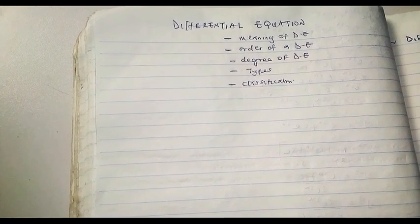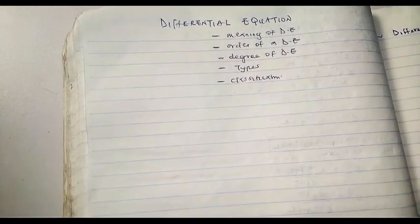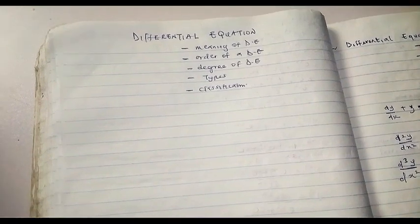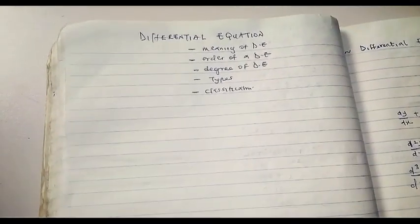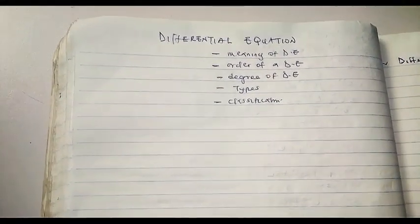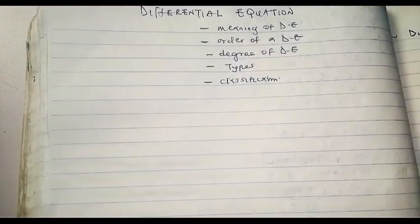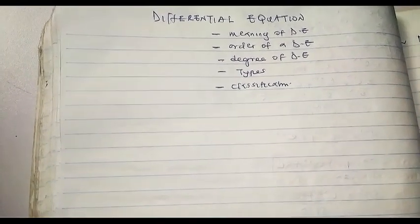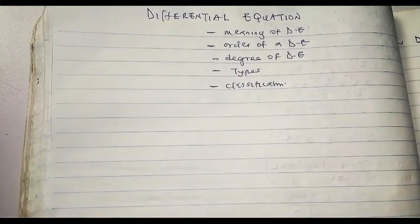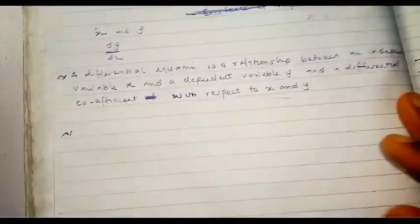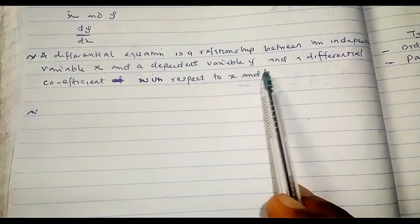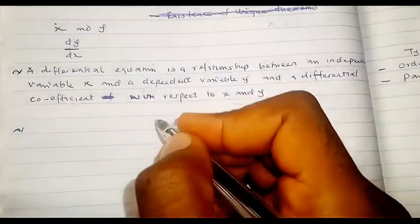Let's look at the meaning of a differential equation. A differential equation is simply an equation that shows the relationship between two variables — it can be x and y, x and t, any variables you can think of. A differential equation shows the relationship between two variables x and y, and also the differential coefficient with respect to x and y. In other words, a differential equation is an equation between an independent variable x and a dependent variable y, along with a differential coefficient.